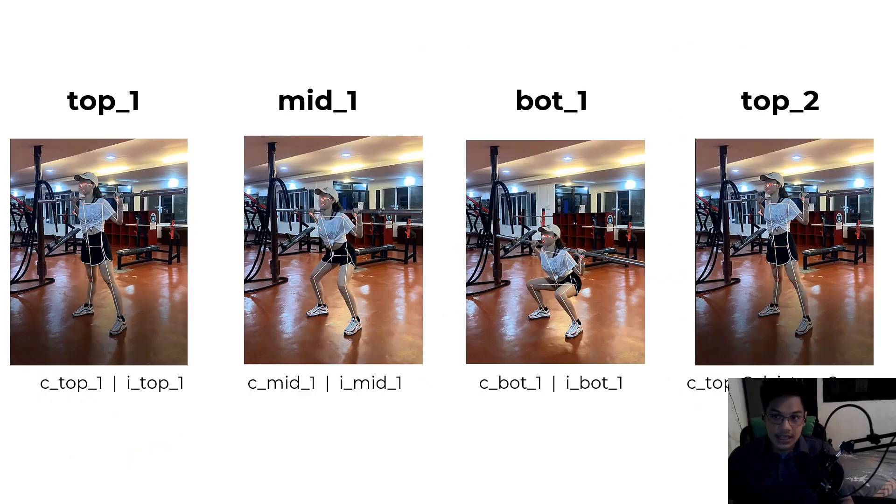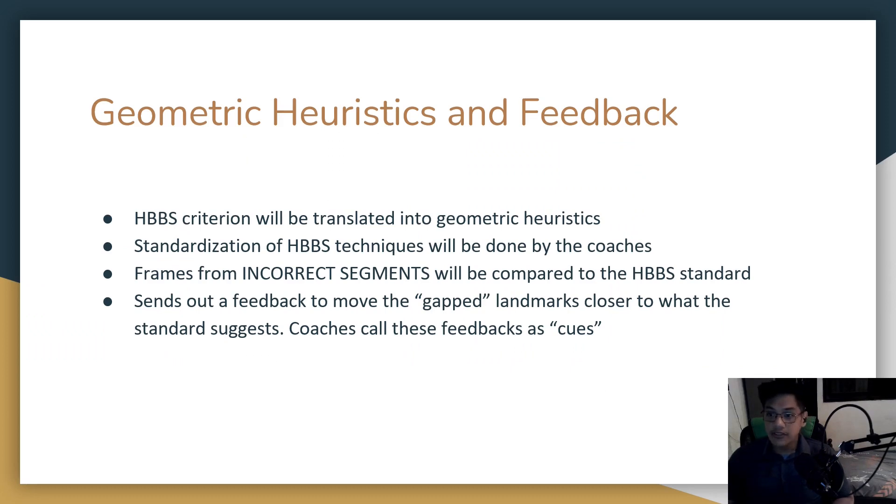The model has eight classes. Each class represents the correct and incorrect version of each segment. Classes are I top 1, C top 1, I mid 1, C mid 1, I bot 1, C bot 1, I top 2, and C top 2. For the geometric heuristics and the entire feedbacking module, the high bar back squat criterion will be translated into geometric heuristics. The standardization of the techniques will be done by the coaches. Frames from incorrect segments will be compared to the standard. It sends out feedback to move the gap landmarks closer to what the standard suggests. These things are called by the coaches as cues.